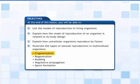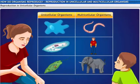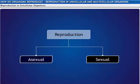The types of asexual reproduction include fragmentation, regeneration, budding, vegetative propagation, and spore formation. We were talking about reproduction and body designs of organisms. At a very basic level, let's consider unicellular and multicellular organisms and relate their body designs to modes of reproduction.